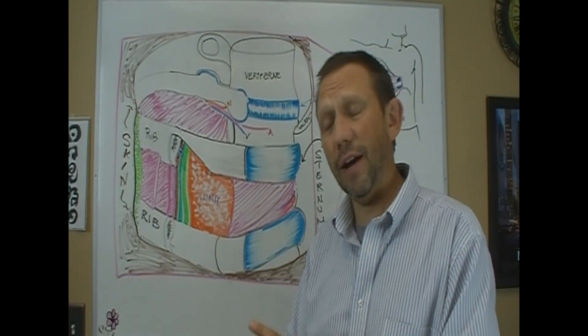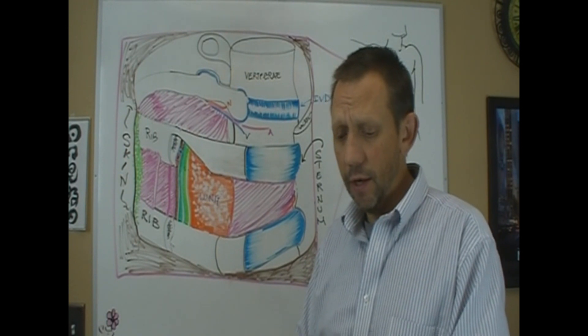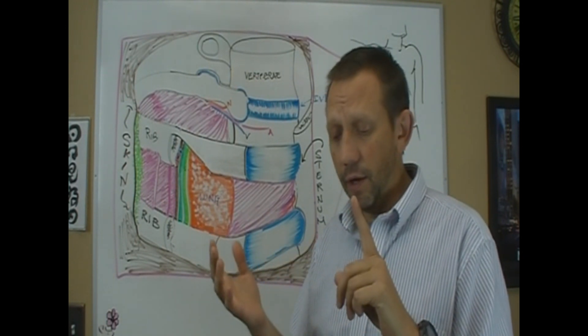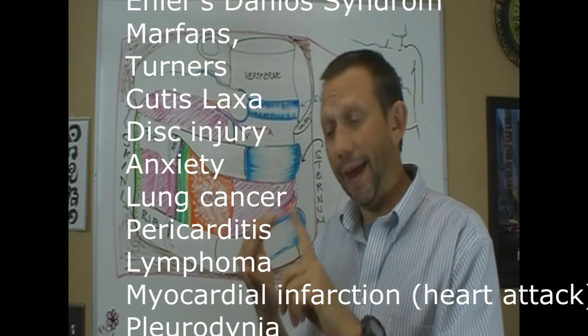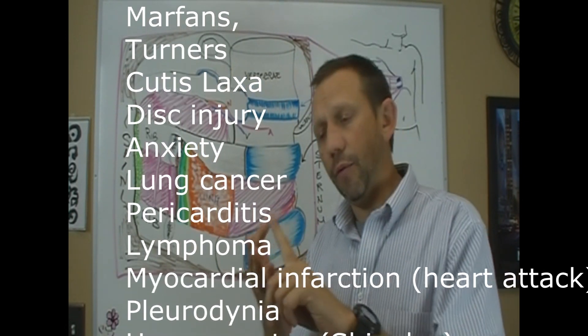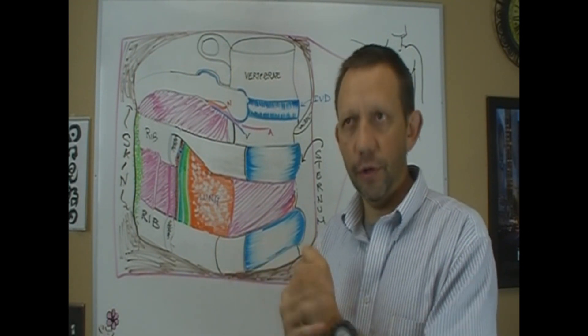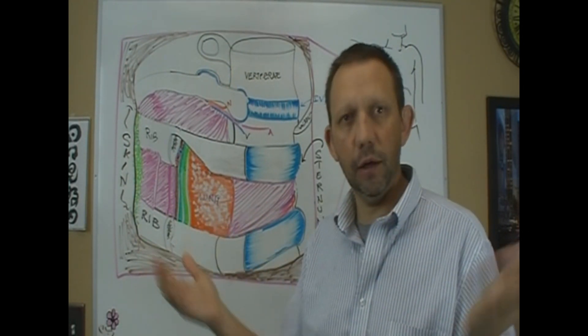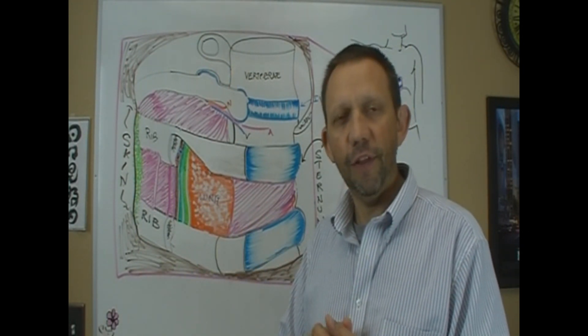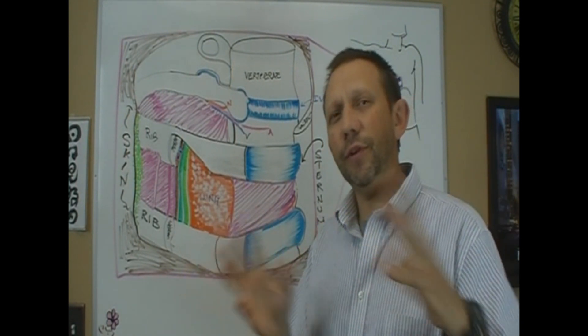Now you can get this if you have something like fibromyalgia, or myofascial pain syndrome, ankylosing spondylitis, Reiter's syndrome, Marfan's syndrome, Turner's syndrome. These are all like genetic, hereditary kind of things. So we have to differential diagnosis.